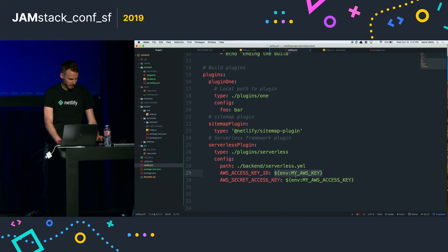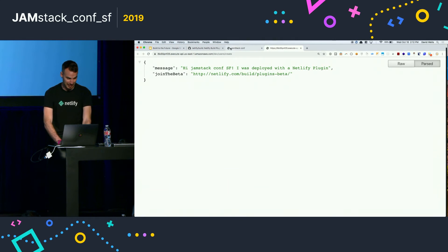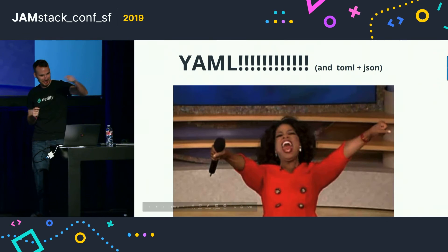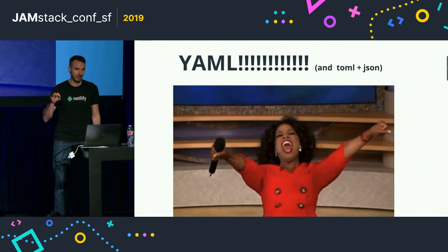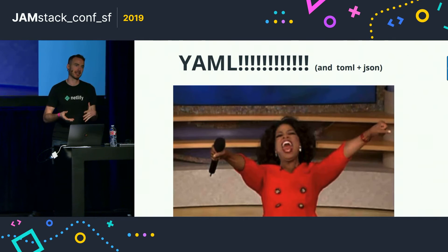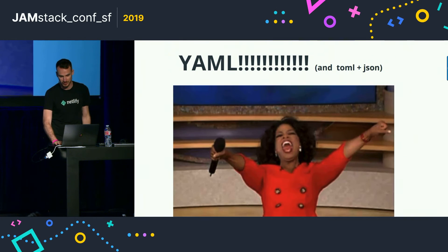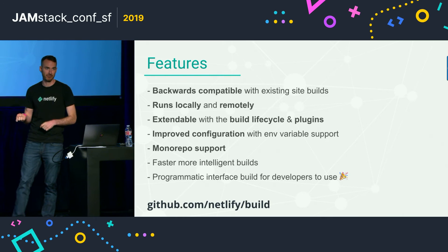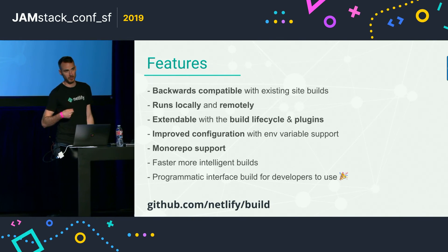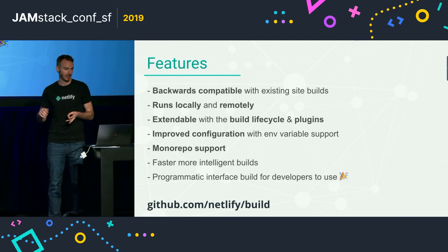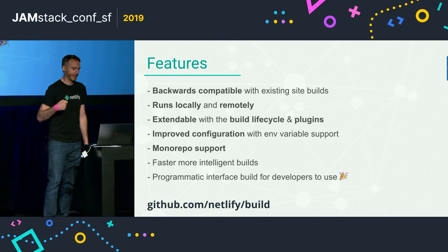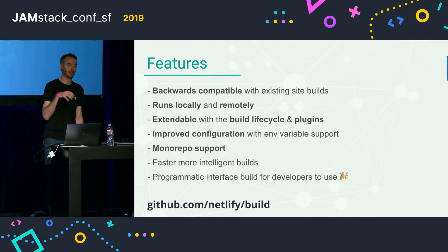And that's it for the live code demo. YAML, TOML, and JSON are all supported. The build system is backwards compatible, so you can run it against your existing TOML file today and everything should just work out of the box. Features include: it runs locally on your machine so you can test before deploying, it's extendable with the build lifecycle and plugins, there's improved configuration support, monorepo support, and we're working on making faster more intelligent builds. Plugin examples include running integration tests with Cypress, building a notification plugin, and doing performance testing with Lighthouse. Really, the sky's the limit and we're excited to see what people start developing.